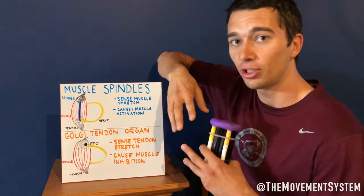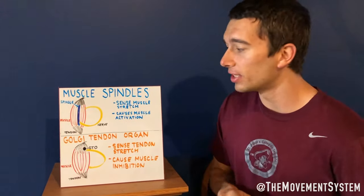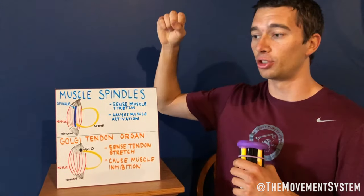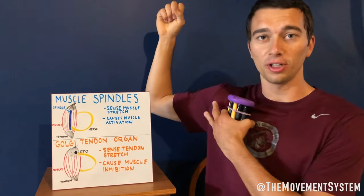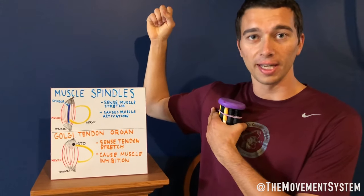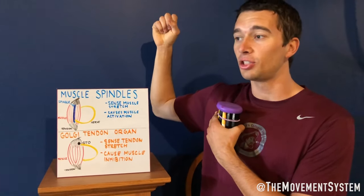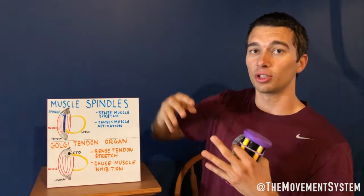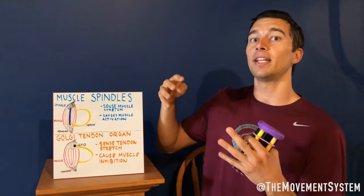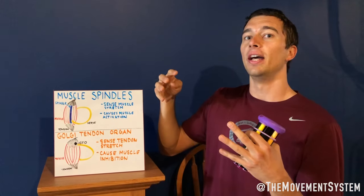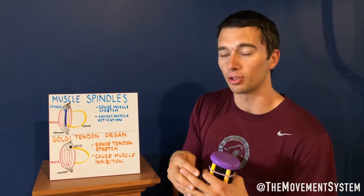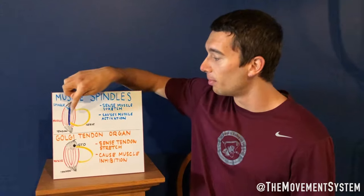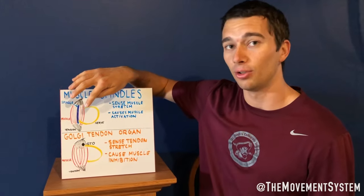So this is facilitating a muscle action — we're sensing a stretch. For example, in a baseball pitch, if you're stretching the front of your shoulder as you're laying back into the pitch, it's going to contract the muscle. It's going to sense that stretch and cause a muscle contraction. That's the muscle spindle.